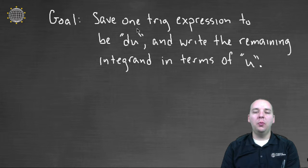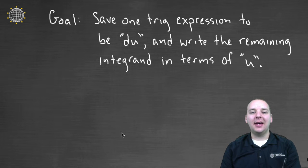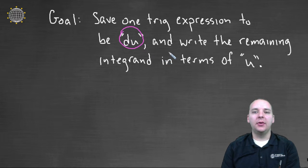So we're going to try to save one trig expression, kind of save it, put it in our pocket, we're going to push it to the end, we're going to save it towards the back end of the integral, back there where the dx was. Because that guy is going to be the du, and then everything else on the front half of the integrand will be written in terms of some u, or something like that.